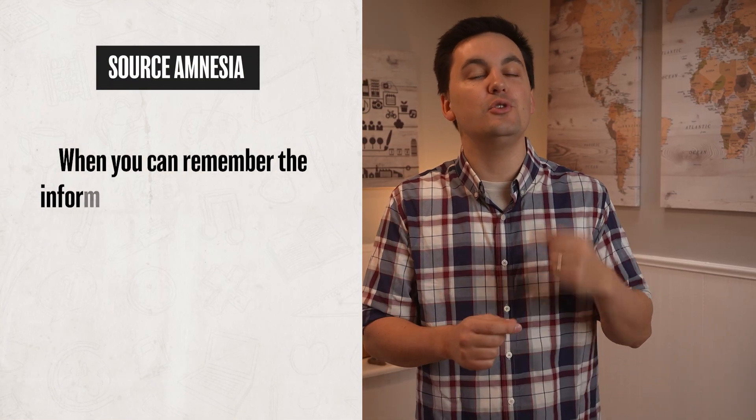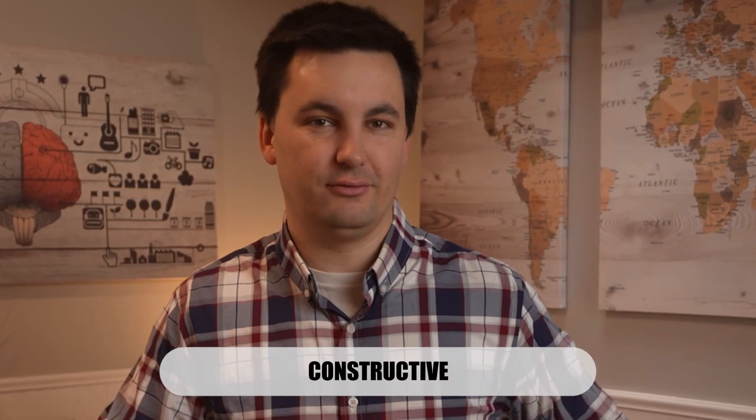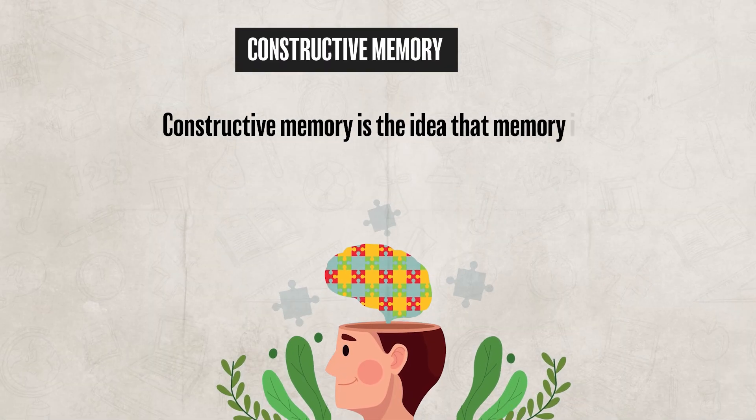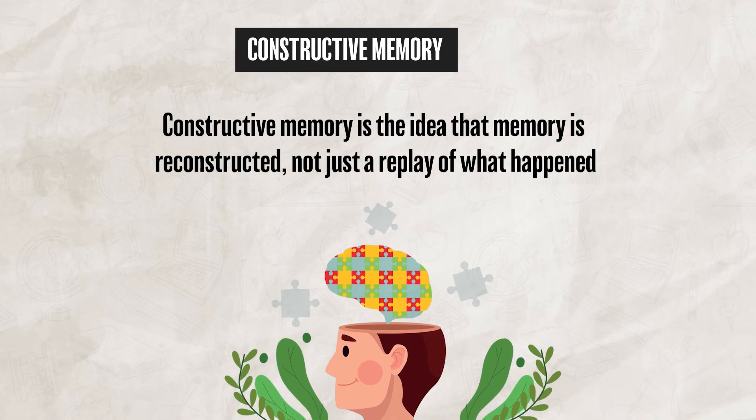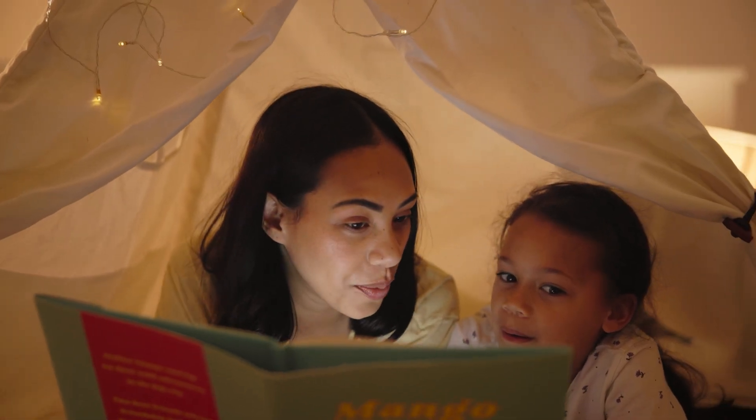Source amnesia occurs when you can remember the information but can't remember where it came from. For example, you might recall a fact you read online but mistakenly think your teacher said it. Both the misinformation effect and source amnesia can create false memories because memory is constructive — it is reconstructed, not just a replay of what happened. Whenever we retrieve memories, they are altered: we fill in gaps, make changes, and maybe add elements. Every retrieval may reshape the memory based on current knowledge, emotions, or external suggestions. This process is known as reconsolidation.